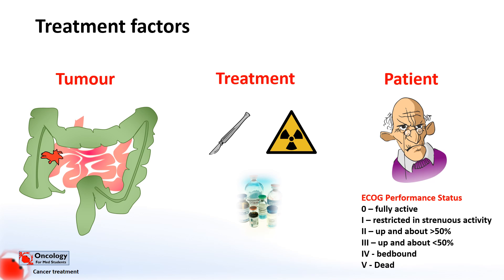Performance status is ranked from zero to five, where zero is someone who's fully active with no restrictions at all. One is someone who's restricted in strenuous activity only, like brisk walking or climbing stairs. Two is where people are restricted but still up and about for over 50% of the day. Three is where they're restricted and up and about for less than 50% of the day. Four is where they're bed-bound. Performance status also has a grade five, which means dead, which I can only assume is useful in terms of research rather than clinical practice.